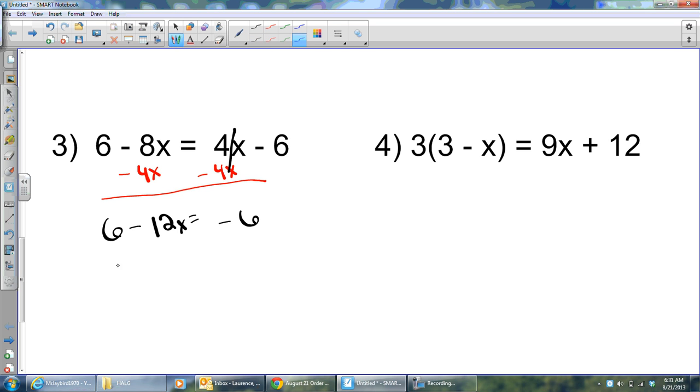My new equation will then become 6 minus, combining these like terms, I get 12x. These will cancel. And I'll have negative 6. All right, now I have a two-step equation. And again, at any point, if you want to stop this video and try to solve it on your own, that's a great idea. And so, I'm going to divide by negative 12. And I'm going to get x equals 1. Because those two negatives would cancel each other out when I divide.